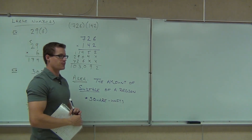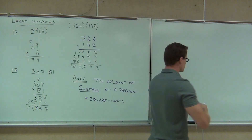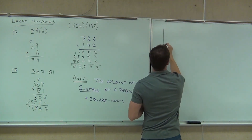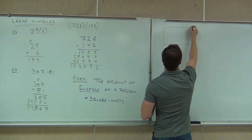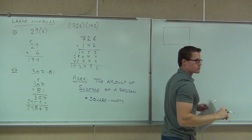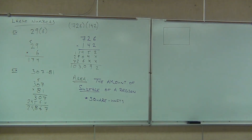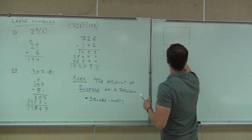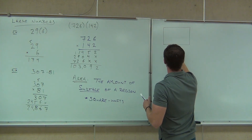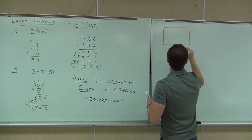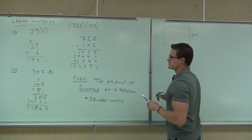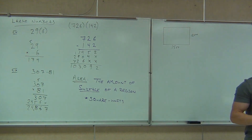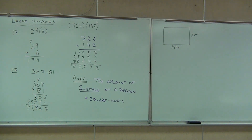Now let's see if we can figure out how to find the area of certain figures. What if your room is rectangular in shape — let's make sure, we have a rectangle. What would happen if your room is 15 feet by 12 feet? First question — don't answer before you think about it: can you find the perimeter for this room?